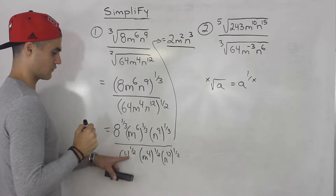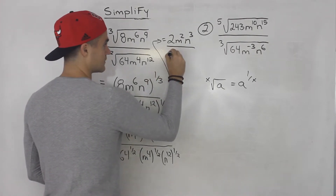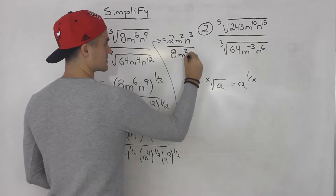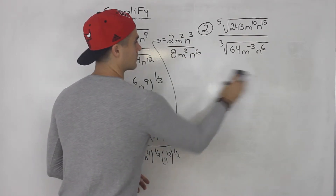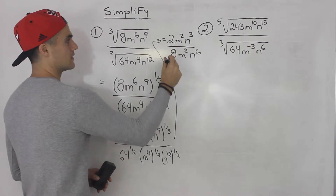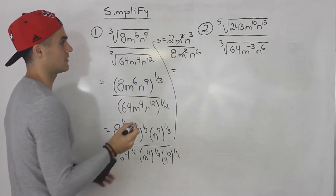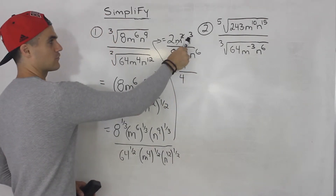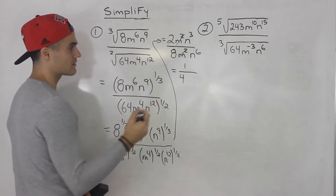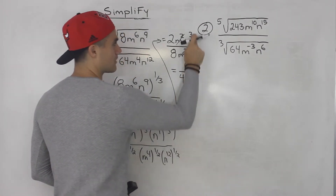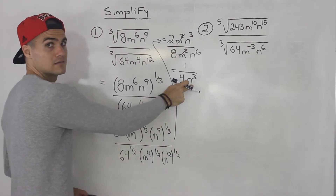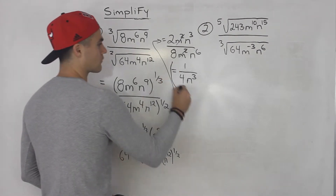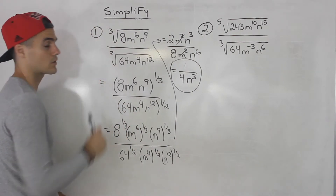All over 64 to the power of 1 half — the square root of 64 is 8. Then 4 times 1 half is 2, and 12 times 1 half is 6. From here we just simplify: the m squareds cancel out. 2 over 8 is 1 over 4, and then we have 3 n's up top and 6 n's on the bottom, meaning we'll be left with 3 n's on the bottom — 3 minus 6 is negative 3, so you bring that to the denominator. So 1 over 4n to the power of 3 is the answer to number 1.